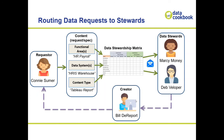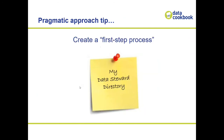As stewards work through requests, they may assign the work to a report writer, who then interacts with them throughout the process and ultimately shares results back to the requester. There are many ways to implement this technically — Data Cookbook being one of them — but you need to decide what roles equate to what content and what actions. Pragmatically, if you don't have a fancy workflow or ticketing system, I recommend starting simple: just having a directory of who the data stewards are for certain things, so if you're working on something you can call and ask.